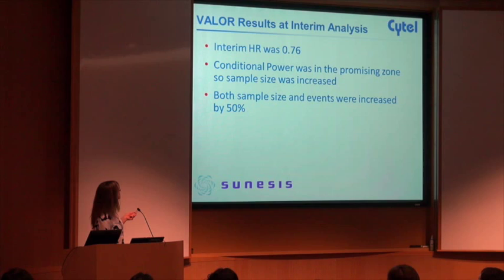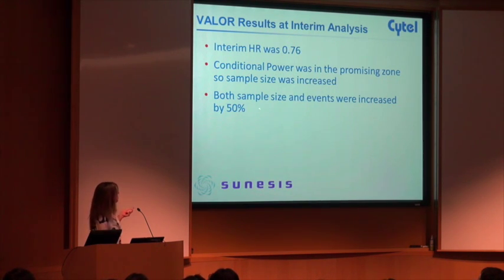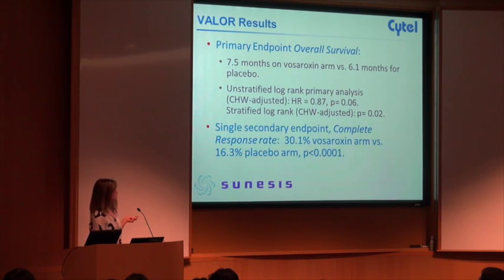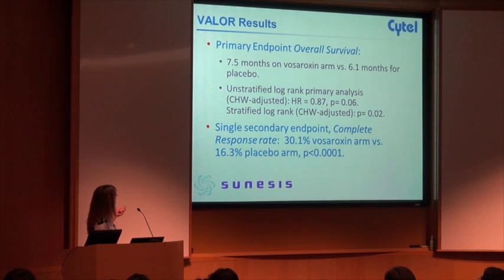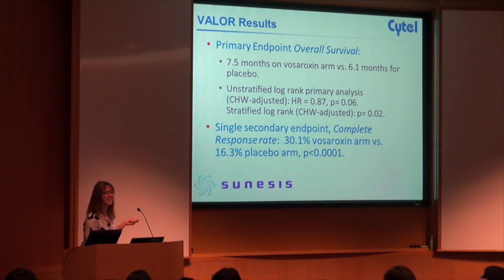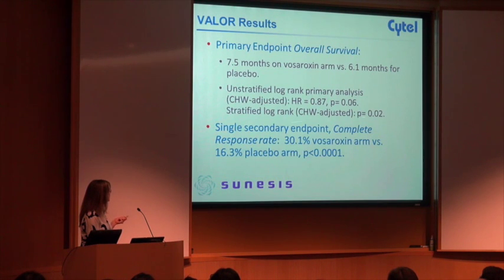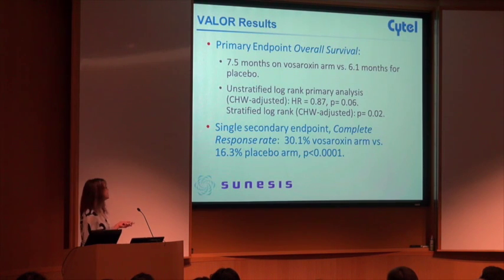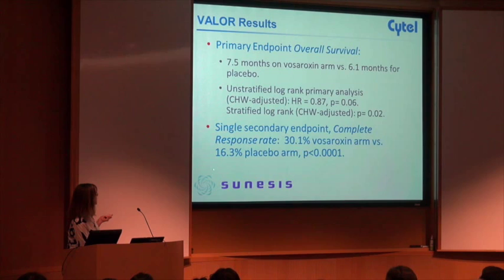The results at the interim for the overall survival hazard ratio was 0.76. The conditional power was in the promising zone, so the sample size and events were both increased by 50%. At the end of the trial, the primary endpoint of overall survival was 7.5 months on the Vosaroxin arm versus 6.1 on the placebo arm. The unstratified log rank — our primary analysis — had a p-value of 0.06, with a hazard ratio of 0.87. The stratified log rank with the CHW adjustment had a p-value of 0.02. The single secondary endpoint of complete response rate was 30% on the Vosaroxin arm versus 16% on the placebo arm — very, very significant.